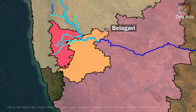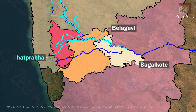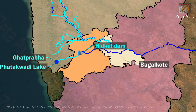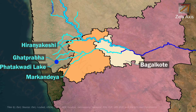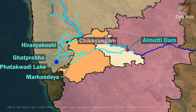From Belgavi, the Krishna River reaches Bagalkot district where the Ghat Prabha River joins it. The Ghat Prabha River originates from Patakwadi Lake in Kolhapur. Hidgal Dam is constructed across the Ghat Prabha River in Belgavi district. During its flow, the Ghat Prabha River is joined by the Hirankesi River and Markandeya River. The Ghat Prabha River finally joins the Krishna River in Bagalkot district at Chiksangam, just after which the Almati Dam is constructed on the Krishna River.